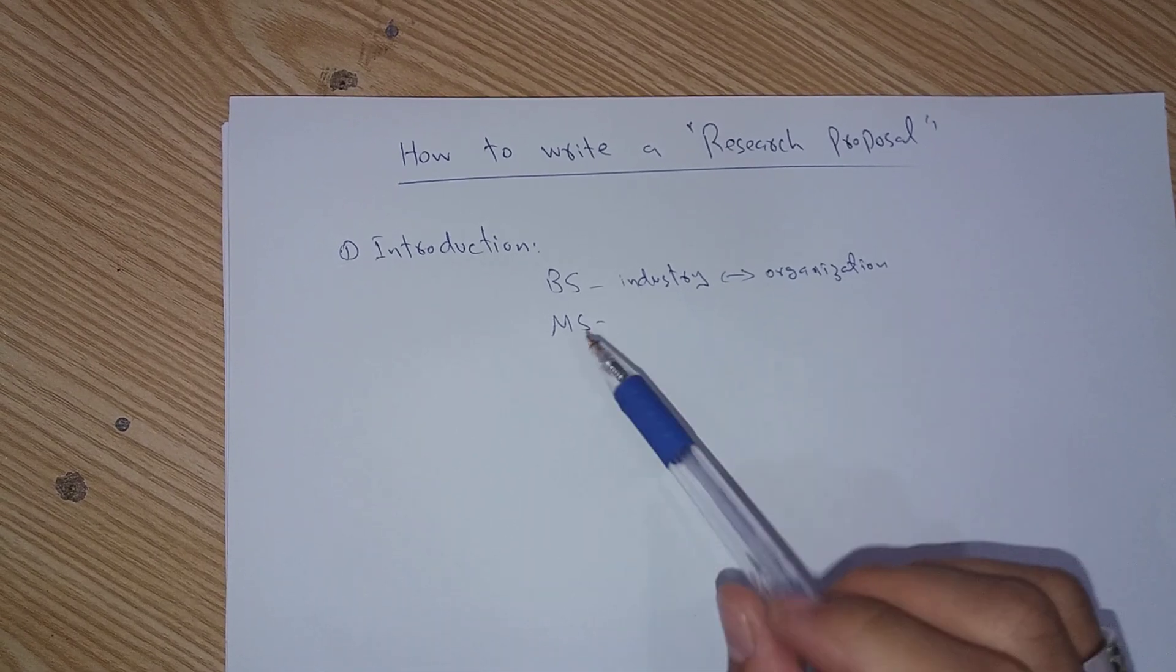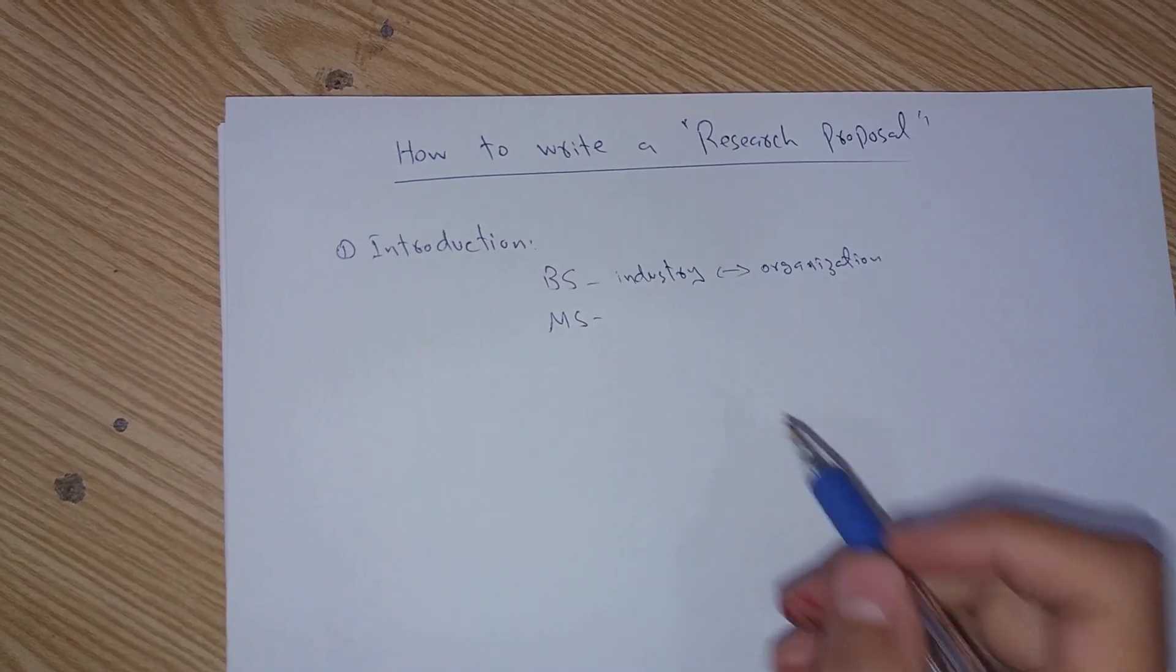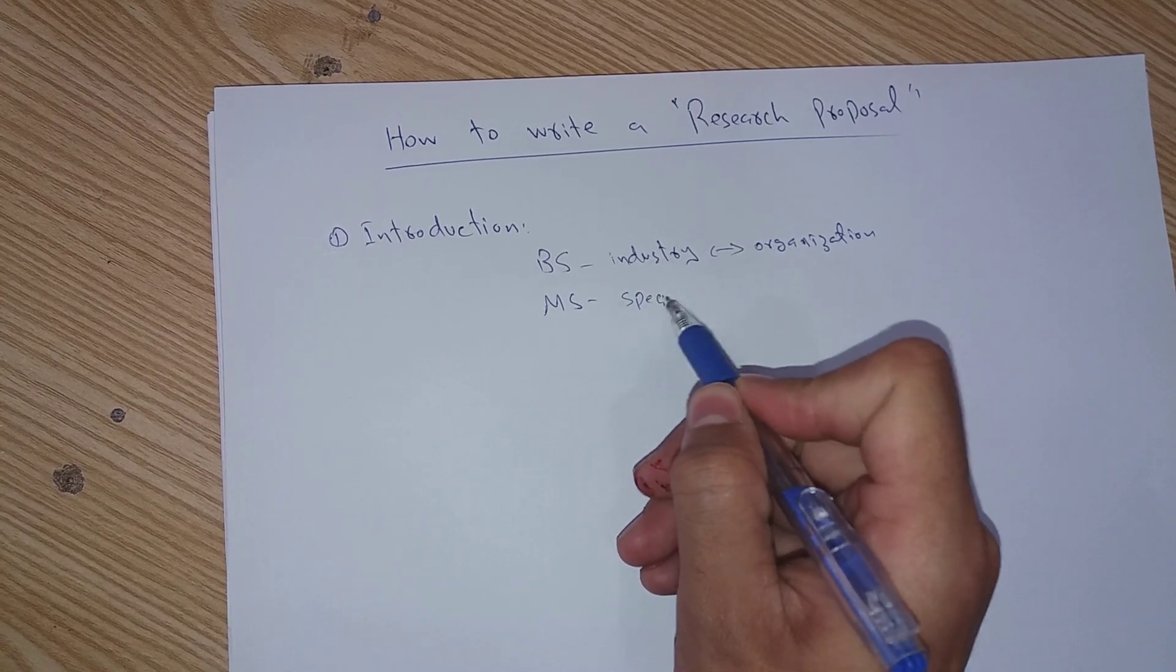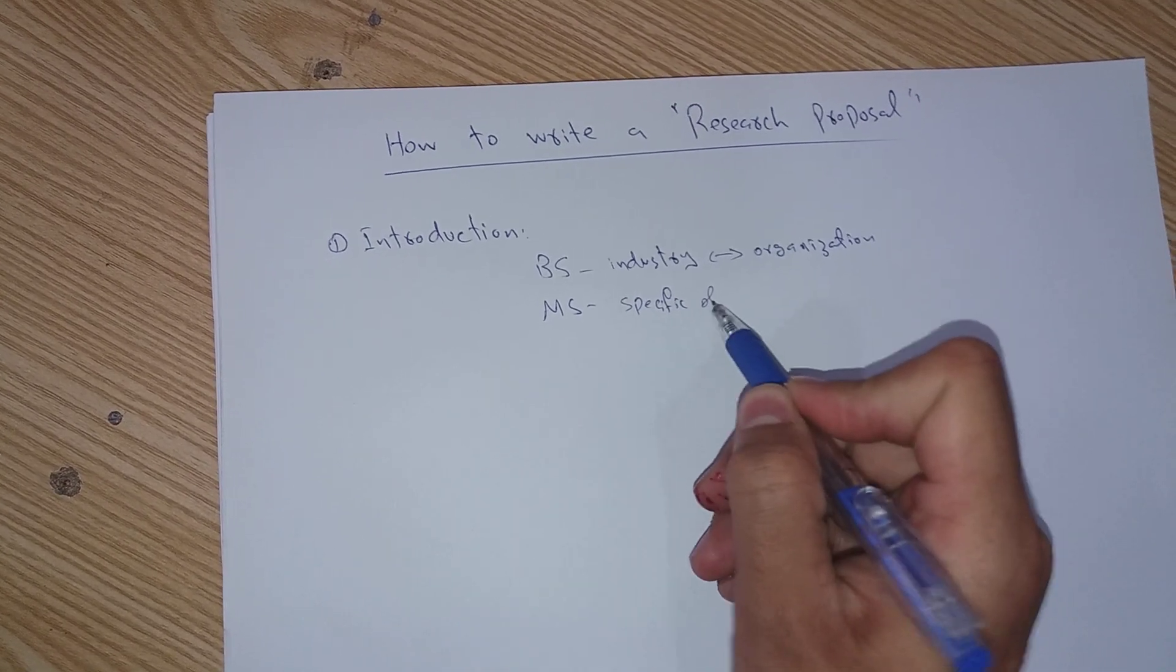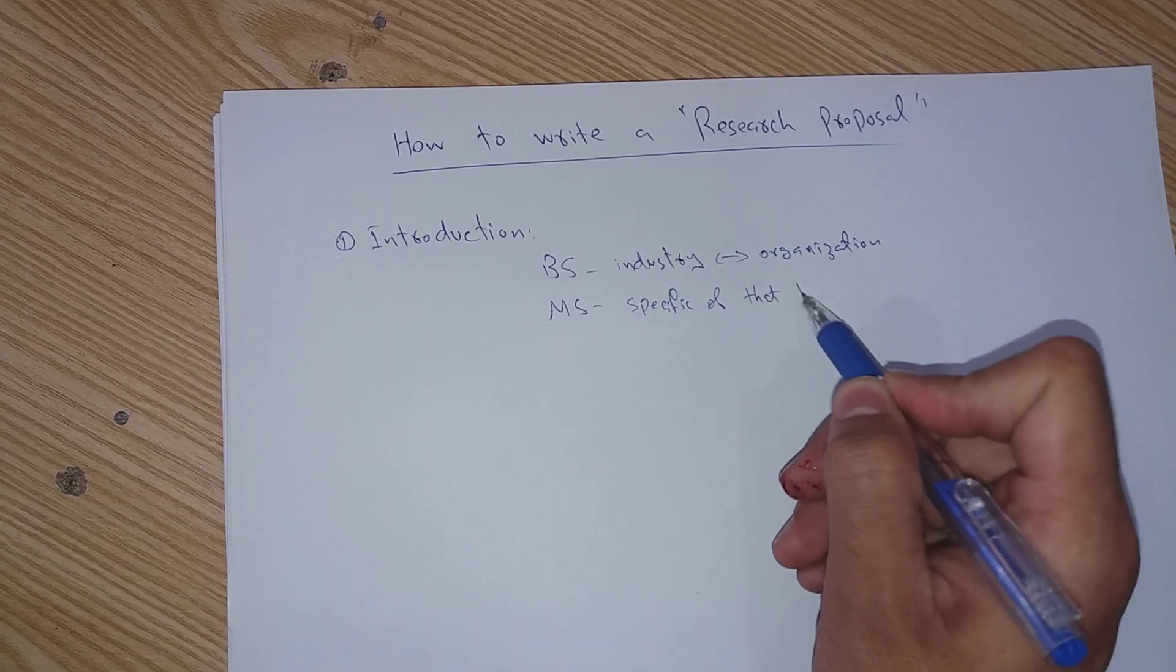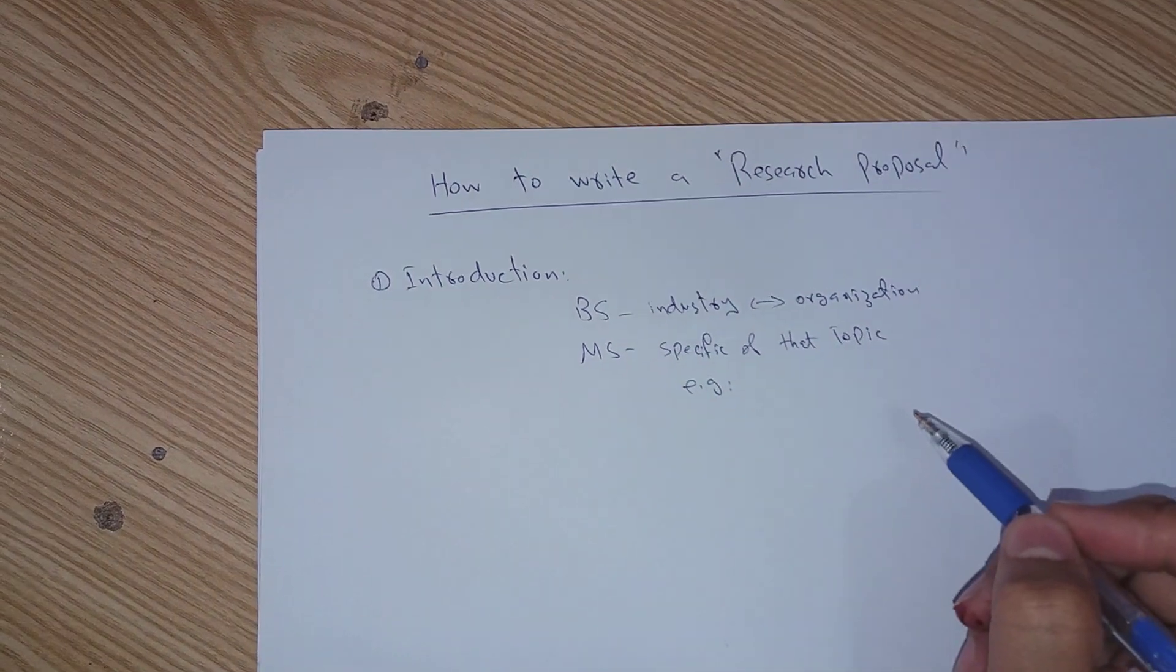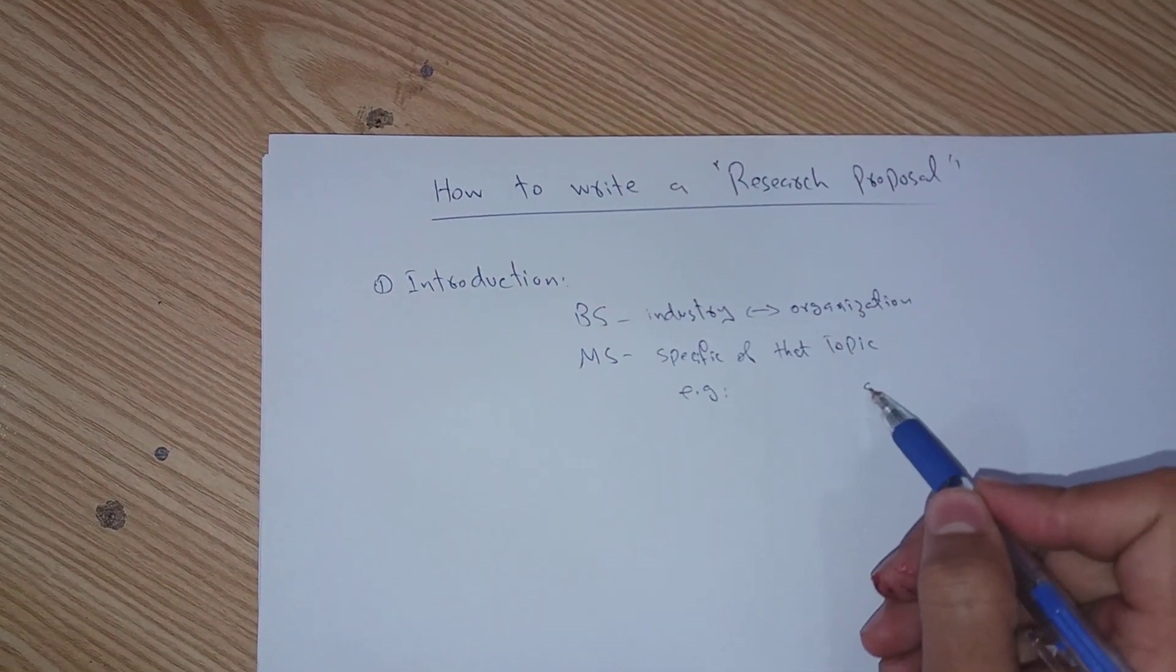And if you are writing a proposal for MS level, you have to be specific of that topic. For example, if I am going to write a research proposal for sensor networks.